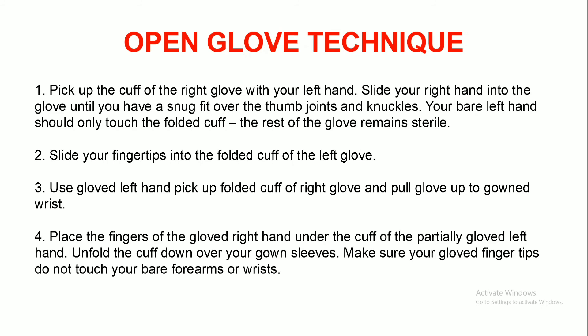For the open gloving technique, which is the main technique used in the OT room: pick up the cuff of the right glove with the left hand and slide the right hand into the glove until you have a snug fit over the thumb, joint, and knuckles. Slide your fingertips into the folded cuff of the left glove — your bare hand should touch the unsterile part but not the outer part of the gloves. Use the gloved left hand to pick up the folded cuff of the right glove and pull the glove up to the gown wrist. Place the fingers of the gloved right hand under the cuff of the partially gloved left hand, then unfold the cuff down over your gown sleeve.